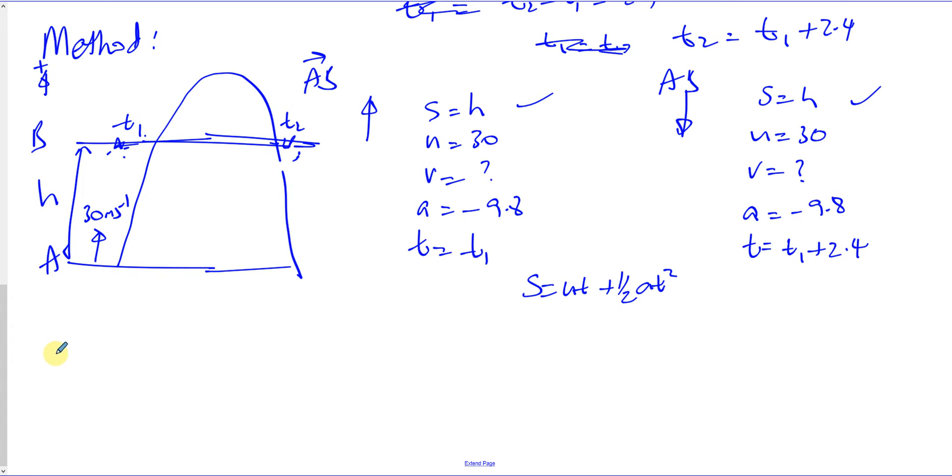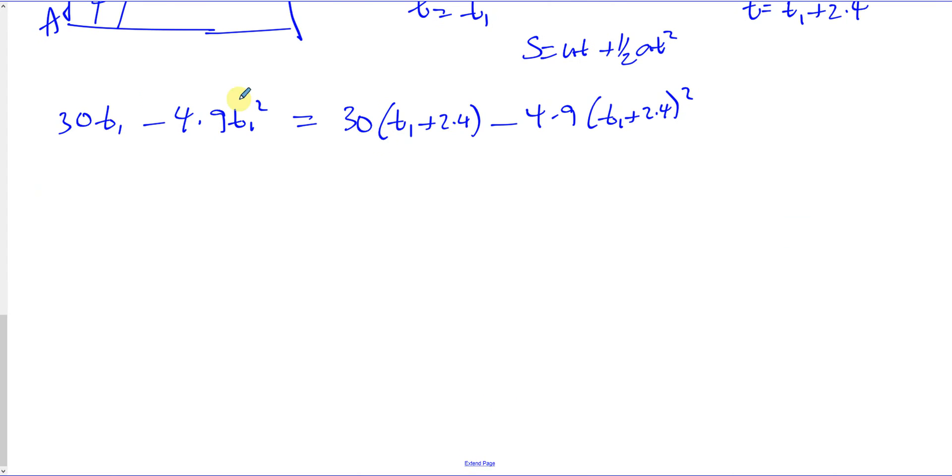And I can make an equation using this and using that and equate the Hs together. And I can then find the time at which it reaches B on the way up, T1. So what I can do is, I can say U is 30. T is T1. So it's 30 times T1. Plus half times A, which is minus 4.9. Times T squared. So that's T1 squared. And that height would be the same as the height given when it's on the way down. So it would be like 30 times the time. Now the time now is T1 plus 2.4 plus half times A, which is minus 4.9 times T squared, which is T1 plus 2.4 squared.